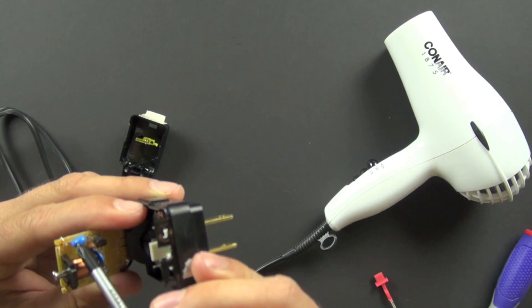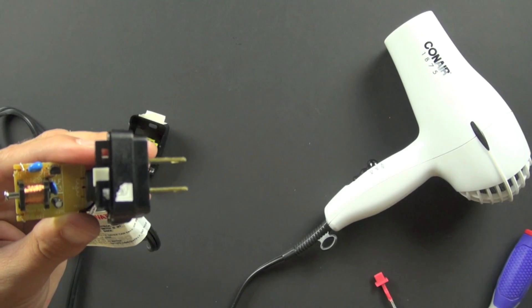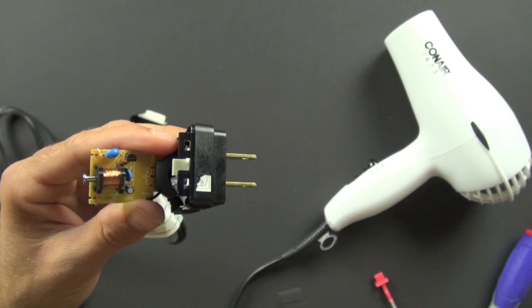It's a nonlinear resistor. In other words, as the current flow changes, the resistance changes. And so it can protect your circuitry there.